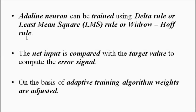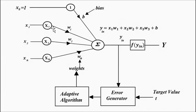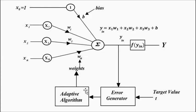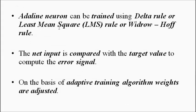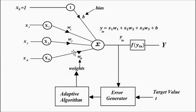Each neural network model applies the overall linear activation function based on the input. The net input is first given to the error generator, which compares it with the target value — the desired value. The error signal, which is the difference between the net input and the target value, is then given to the adaptive algorithm — the Widrow-Hoff rule, also called the least mean square or delta rule — which is used to make suitable adjustments to the synaptic weights connecting the input layer neurons to the output.